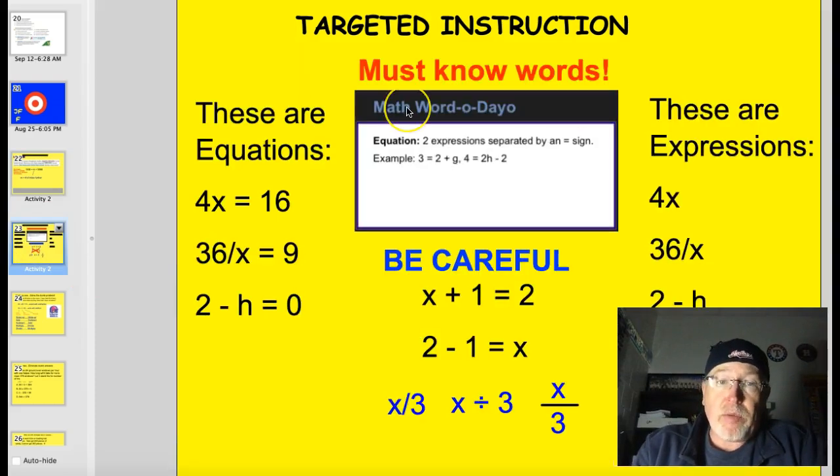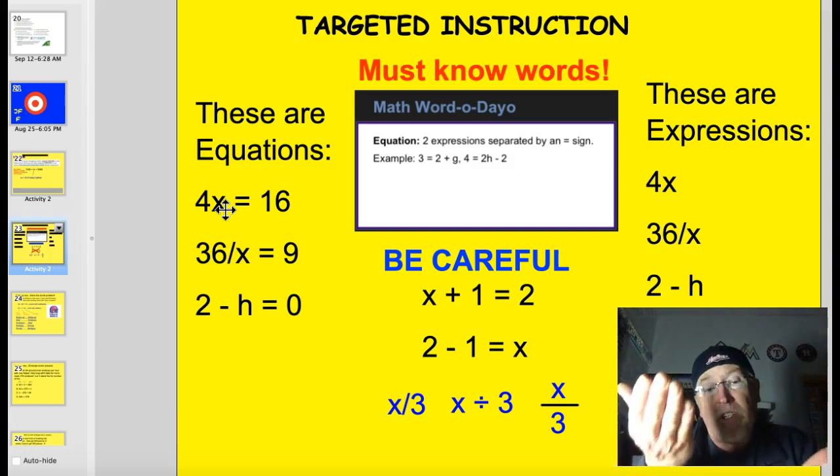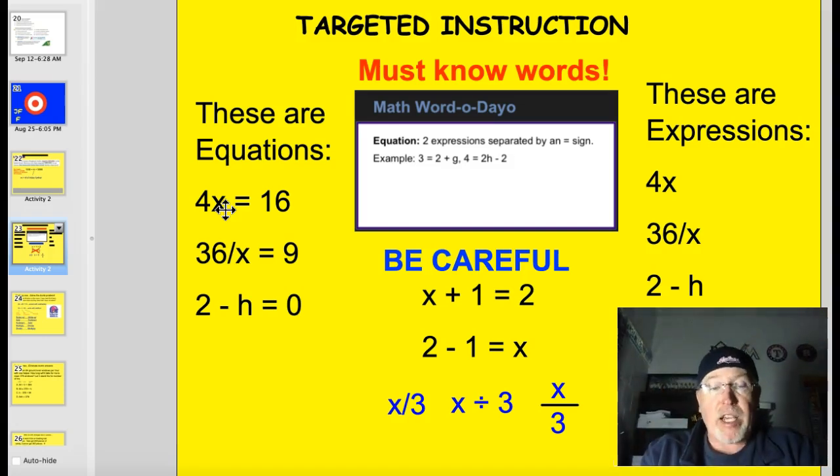Let's look at some vocabulary. First of all, expressions and equations. These here are expressions. We've been working a lot with these. We've got 4x, we've got 36 divided by x, we've got 2 minus h. They all are some combination of symbols and letters or variables that represent something. These here, on the other hand, are equations. They have symbols, they have variables, but they also have an equal sign. Remember that equal sign is like a teeter-totter. It balances out. Whatever's on one side has to be balanced out by what's on the other side.